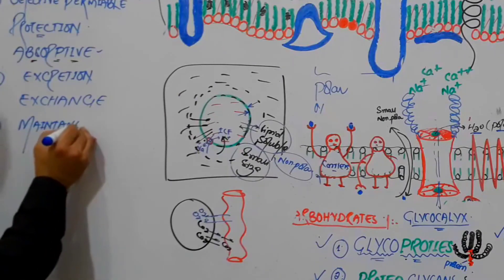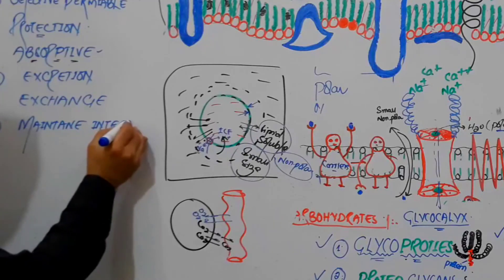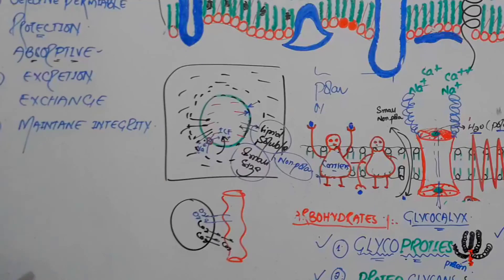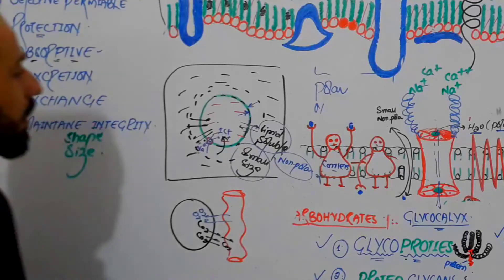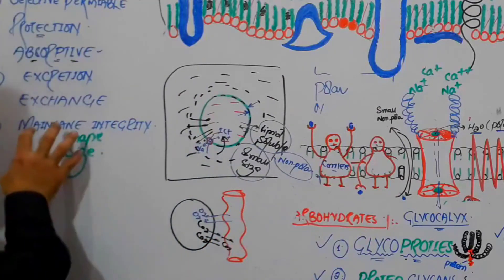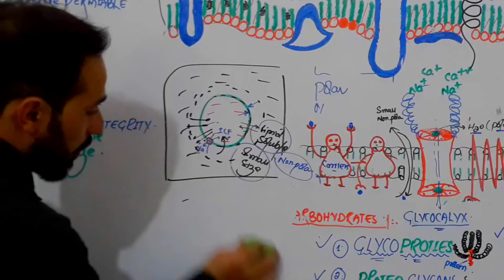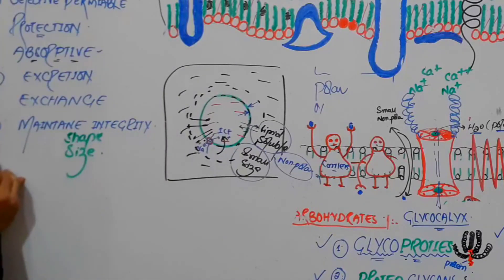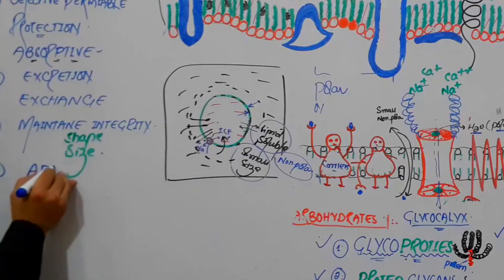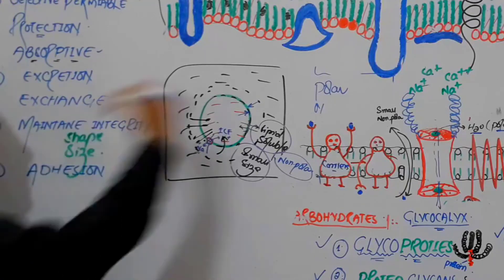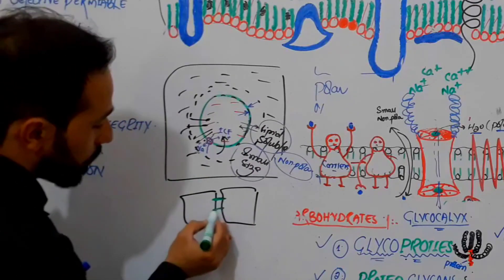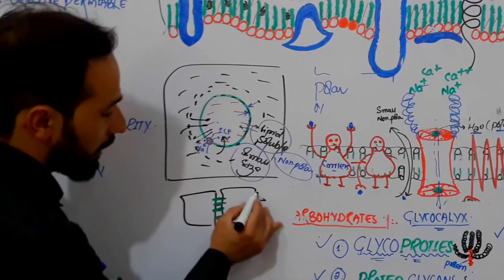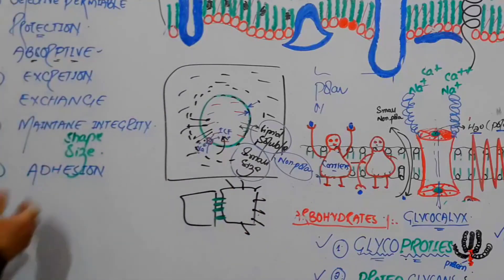The next function is that the cell membrane helps to maintain the integrity of the cell. By integrity we mean the size and shape of the cell. The cell membrane does not allow the cell to expand too much, so it helps to maintain the size and shape of the cell. Additionally, the cell membrane helps in adhesion — it has certain proteins which keep one cell adhesive to other cells and to the tissue.